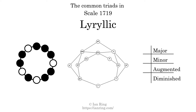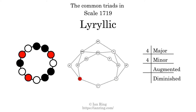Here are the common triads present in this scale. The diagram in the center is a graph of parsimonious voice leading between triads. There are 4 major triads, 4 minor triads, 1 augmented triad, and 4 diminished triads.